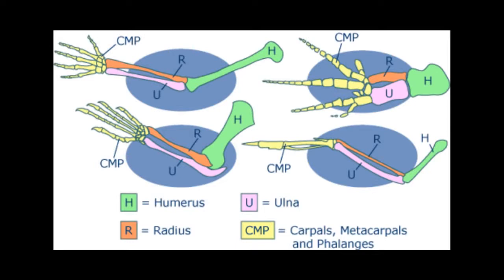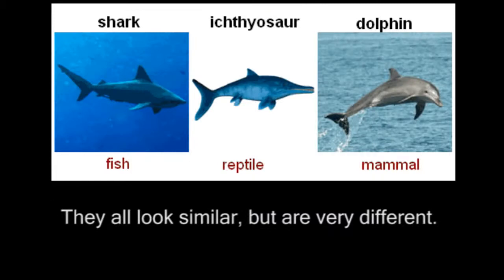Evolution predicts that structures will change over time as life progresses. As such, we should expect to find specific similarities in the bodies of organisms which share a common ancestor. It's very important to note that a similarity alone is not enough — we have to find a distinct pattern of similarities and differences where needed. After all, humans and apes having very similar anatomical arrangements would mean absolutely nothing if they were cold-blooded, had genes for making feathers, or laid eggs. It's not the similarities, but a distinct pattern and location of those similarities and differences which is necessary.